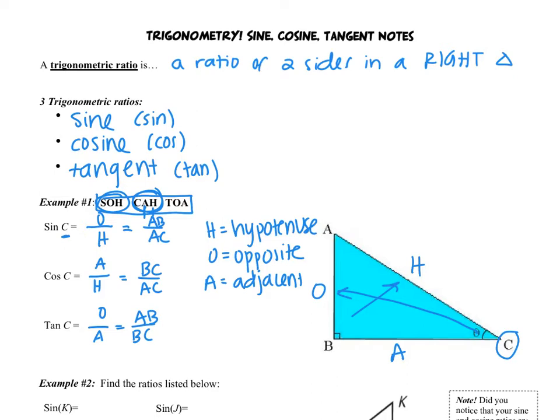So it is really important that you have this memorized. That will tell you how to find each ratio. So O and H goes with sine, A and H goes with cosine, O and A goes with tangent. So anytime you do a trig problem, you need to write that down. And your very first step is labeling which side is which.